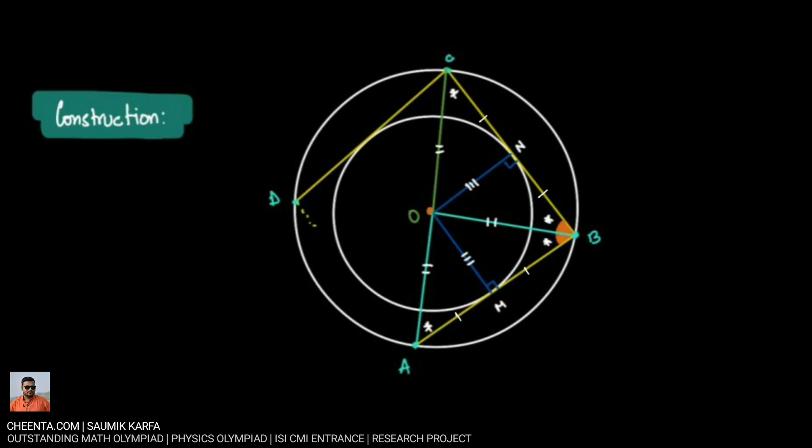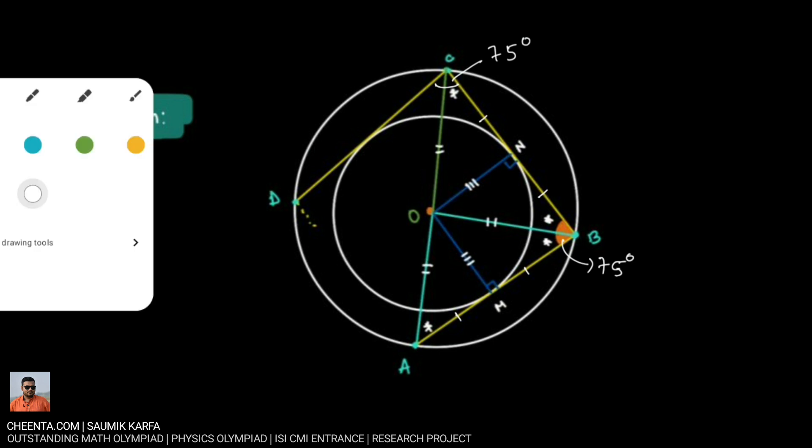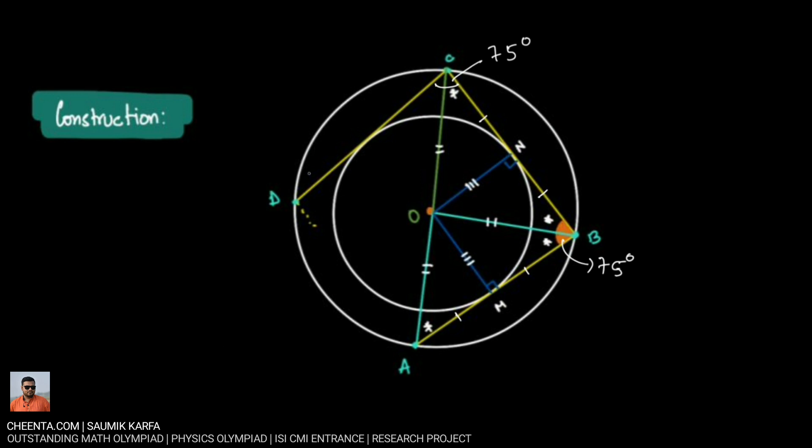Now we were given that this angle was 75 degrees. So if we see that this angle will also be 75 degrees, and not only that, whenever we will make such a chord the angle between that chord and the previous chord will always be 75 degrees. So if we create this chord here the angle created will be 75 degrees.